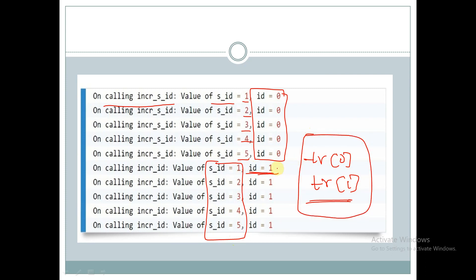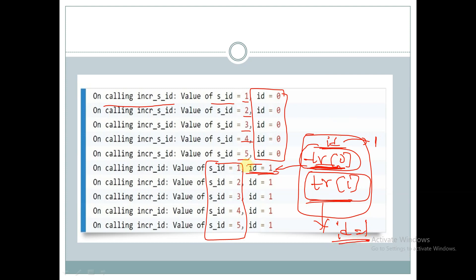Since every object has its own copy of 'ID', when we call 'incr_ID' with a new object, 'ID' is incremented to 1 for that object, but the next object starts from its own fresh copy, so 'ID' stays at 1 each time rather than accumulating. That is why 'ID' is not incrementing globally whereas 's_ID', being common to all objects, keeps incrementing. This is all about static functions in SystemVerilog, thank you for watching.